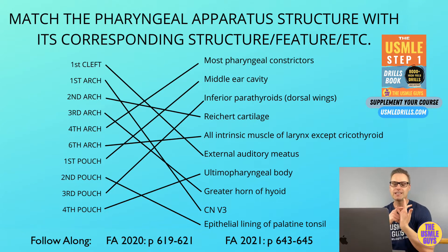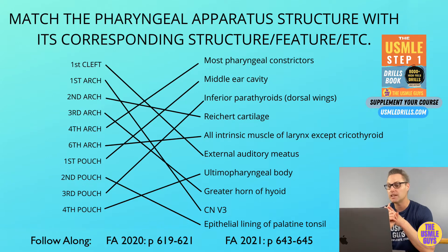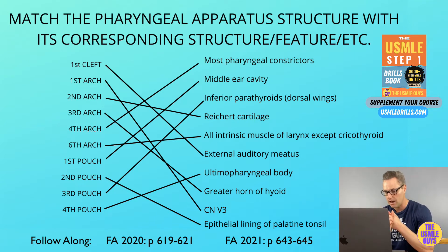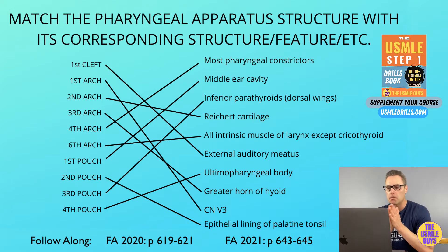The first pouch gives rise to the eustachian tube and the middle ear cavity. The second gives rise to the lining of the palatine tonsil. The third dorsal aspect gives us the inferior parathyroids — high yield and commonly tested — while the ventral gives us the thymus. The fourth dorsal aspect gives us the superior parathyroid glands, while the ventral gives us the ultimopharyngeal body, the C cells of the thyroid.